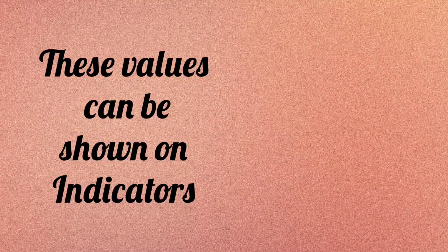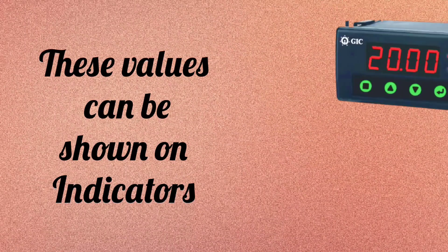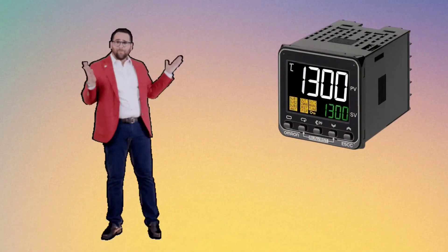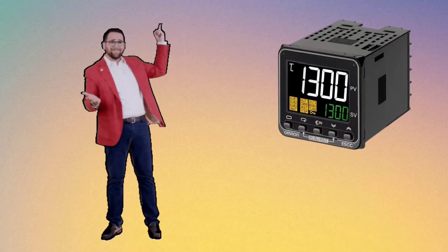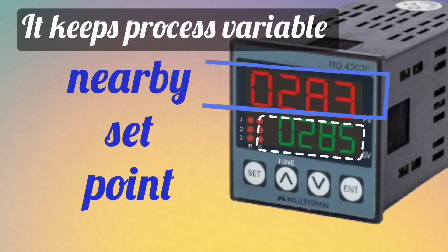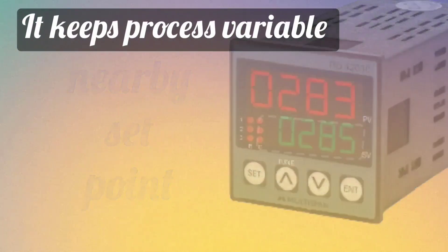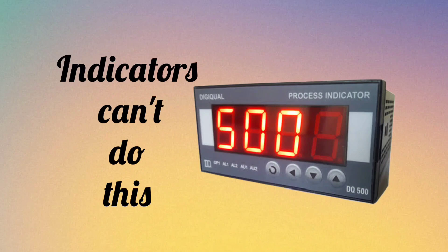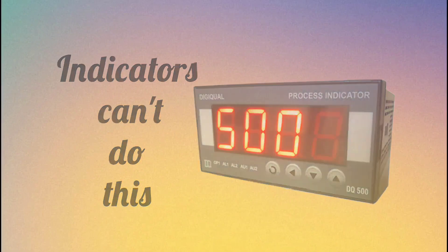You can show these values on indicators as well, but the wonder of a PID controller is that it keeps the process variable around the set point — indicators cannot do this work.